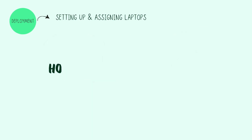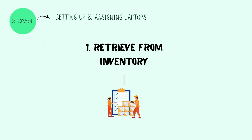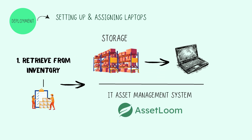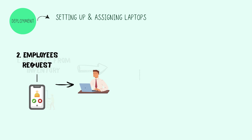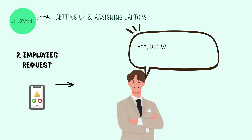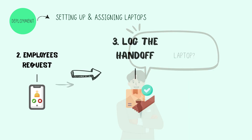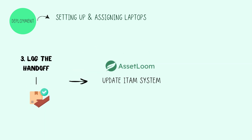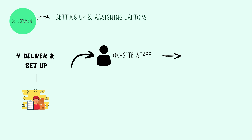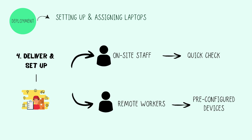The laptops have arrived, tagged, and logged. Now it's time for deployment — setting up and assigning laptops. Step 1: Retrieve from inventory — IT pulls the laptops from storage using the IT asset management system like Assetloom, making sure nothing accidentally disappears. Step 2: Employees request — workers reserve devices via the IT portal and IT assigns them. No more 'Did we already give Mark a laptop?' Step 3: Log the handoff — IT updates the system with who got what, when, and if it's permanent or temporary. Step 4: Deliver and set up — on-site staff get laptops handed over with a quick check, while remote workers receive pre-configured devices by mail, ready to go.